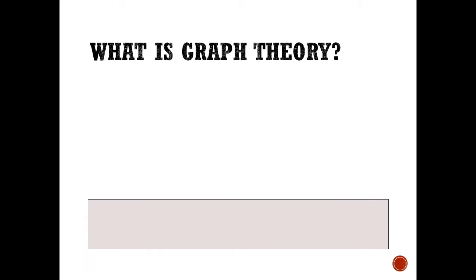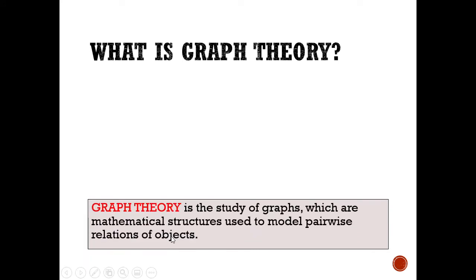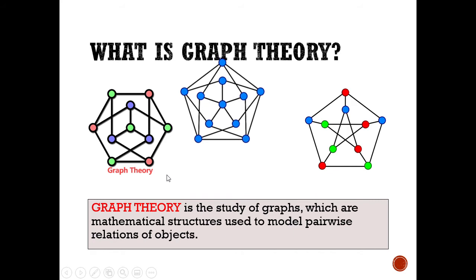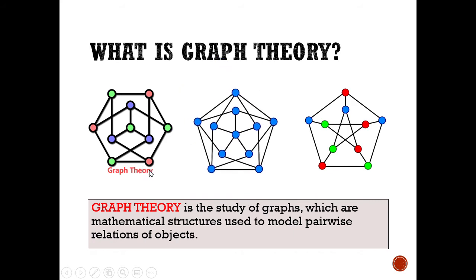Basically, graph theory is a branch of mathematics that deals with the study of relations between objects. Usually, the objects being studied are represented by these small circles. And in case the objects are related in some manner, we draw a line segment between them.